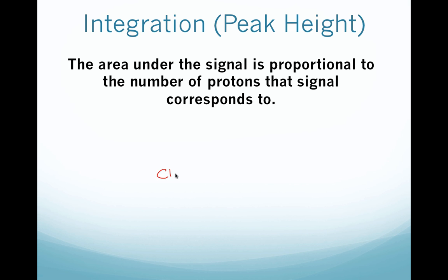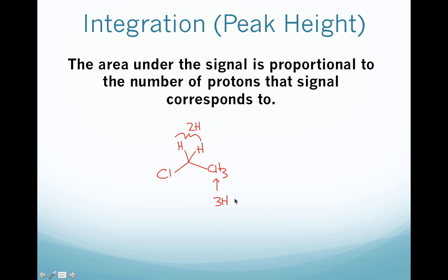For example, if you have chloroethane, we have two different types of protons: the CH3 group and the CH2 group. We'll have one signal that integrates for 3 hydrogen and another signal that integrates for 2 hydrogen. So you would expect the signal that integrates for 3 hydrogen to have a larger peak area, which in fact it does.